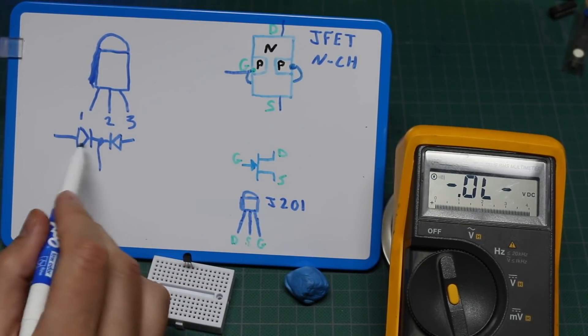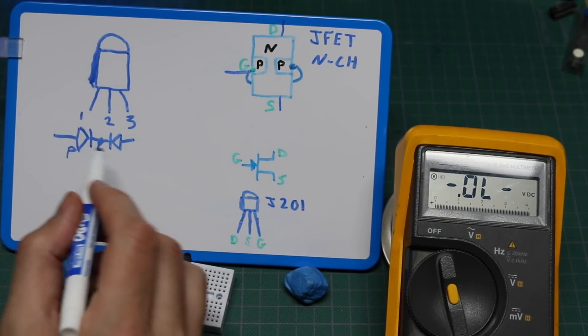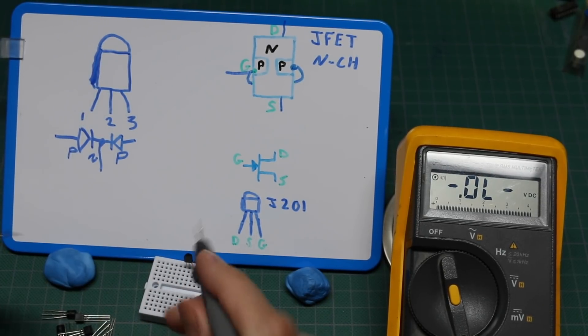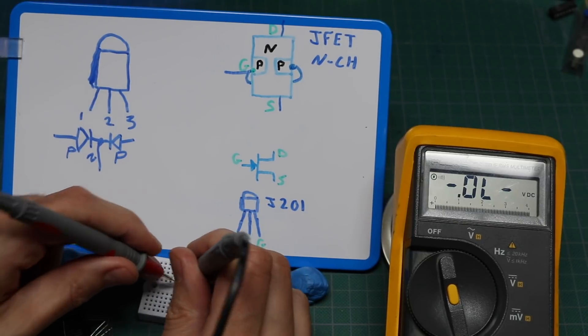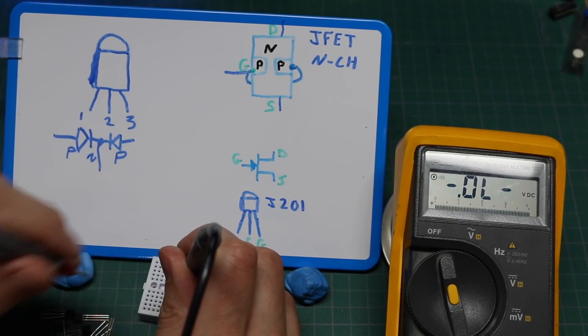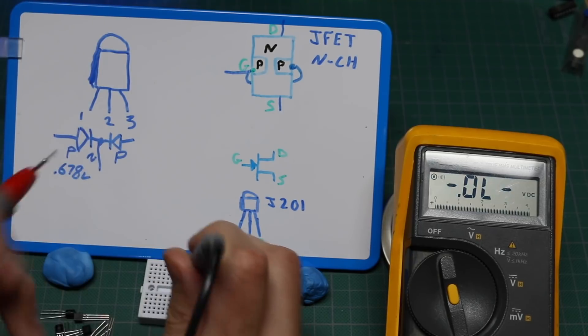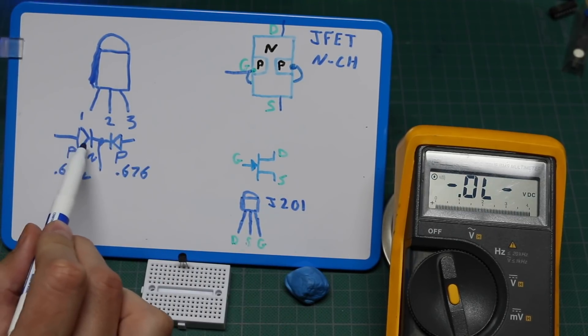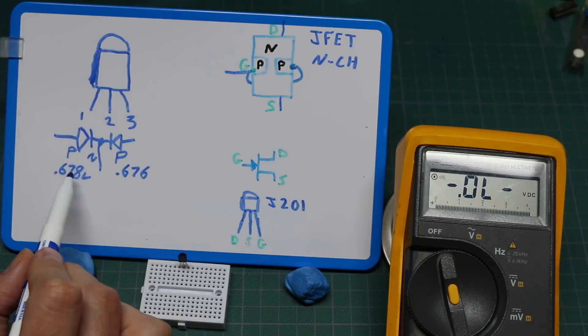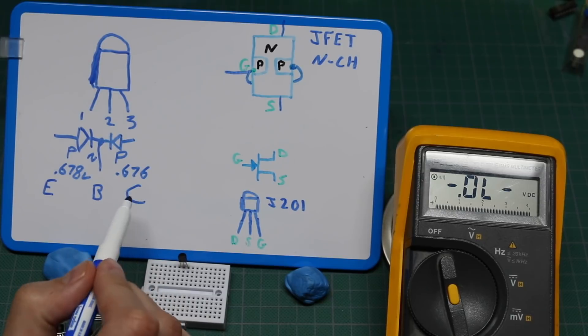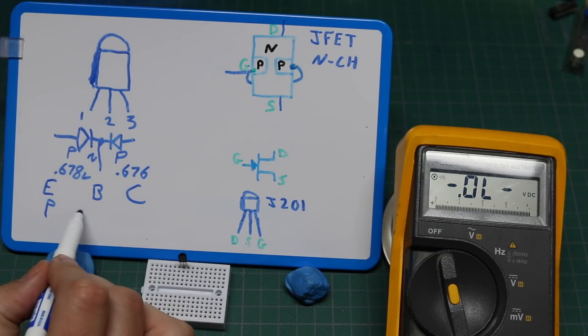So this looks like PNP: anode, cathode, anode. The forward voltage is 0.678, 0.676. This PN junction has a slightly higher forward voltage, so this looks like emitter, base, collector PNP.